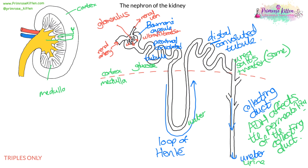You won't find any glucose in urine unless the person is diabetic, and you won't find any amino acids. Red blood cells, white blood cells, large proteins, etc., stay in the glomerulus — they can't get filtered into the Bowman's capsule because they're too big. What's filtered by ultrafiltration into the Bowman's capsule includes glucose, amino acids, urea, salts, and water. By the time that reaches the loop of Henle, glucose and amino acids have been reabsorbed in the proximal convoluted tubule. Only water, urea, and salts carry on.